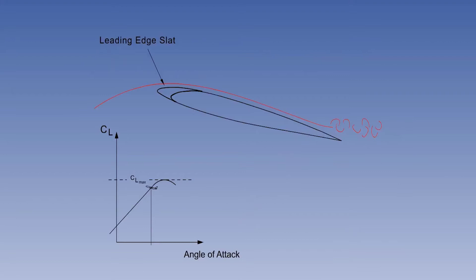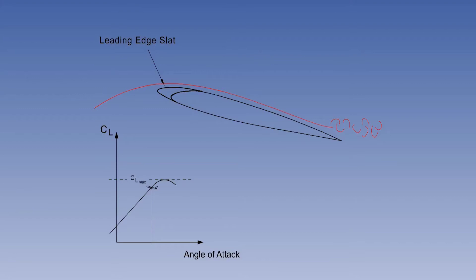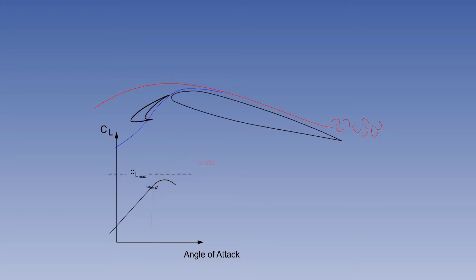Now we come to the most efficient leading-edge high-lift device: the slat. To illustrate the effect of slats, a wing is shown at a high angle of attack, with the airflow just starting to separate at the trailing edge. The aircraft is positioned on the lift curve. As the slats are driven open, high-energy air from under the leading edge flows onto the top surface of the wing, increasing the kinetic energy in the boundary layer, which in this example reattaches the airflow.